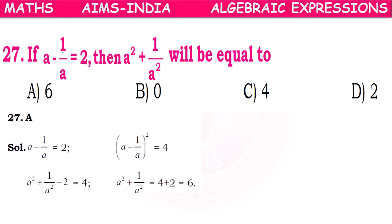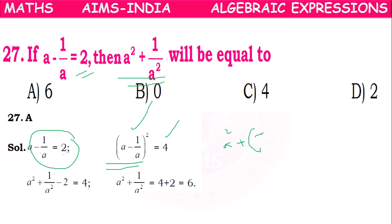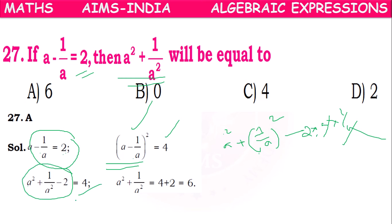Next: if a - 1/a = 2, then a² + 1/a² how much? If we square both sides: (a - 1/a)² = 4. Expanding using the identity: a² + 1/a² - 2(a)(1/a) = 4. The a cancels giving 2 × 1 = 2. So a² + 1/a² - 2 = 4, meaning a² + 1/a² = 4 + 2 = 6. Option A is correct.